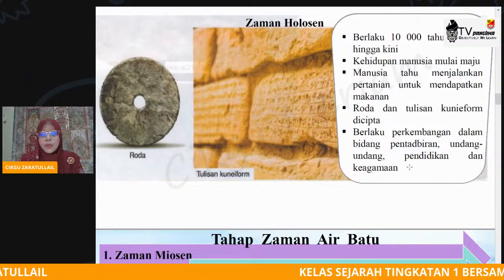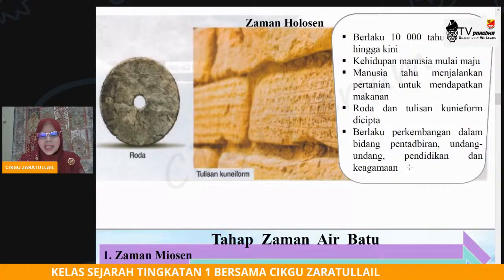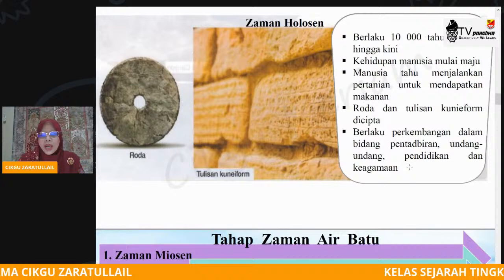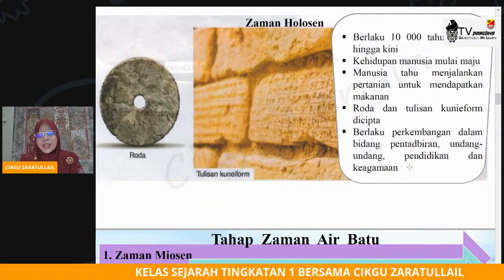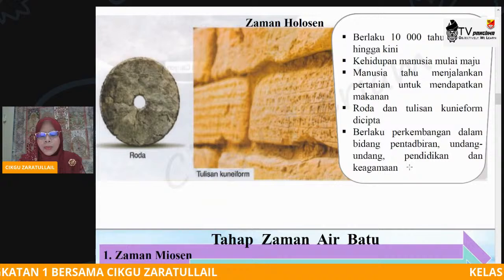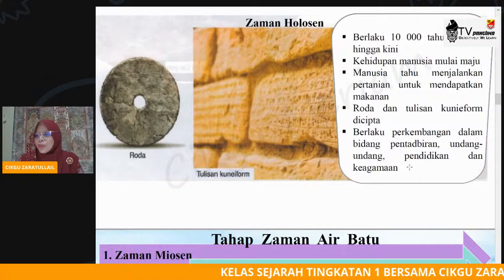Kalau kita sebut hari ini, ia seperti organisasi. Contoh dalam kelas ada cikgu tingkatan, ada guru, ada ketua tingkatan, ada penolong. Tetapi pada zaman tersebut, mungkin apa yang diperlukan ialah seorang ketua. Kemudian mungkin mereka akan lantik siapa ketua pemburu, siapa ketua untuk menguruskan hal ehwal kanak-kanak. Dan pada ketika itu sudah wujud undang-undang.